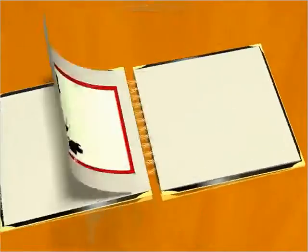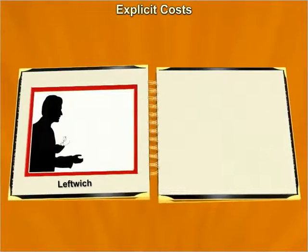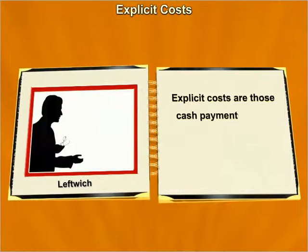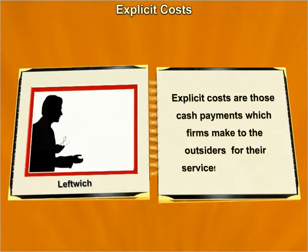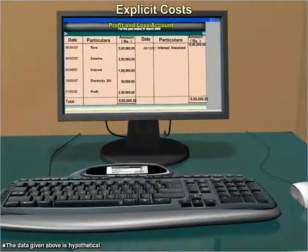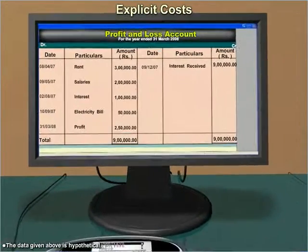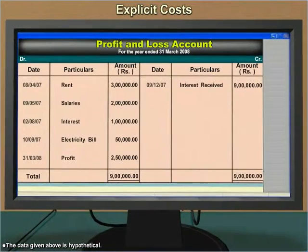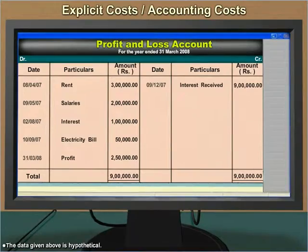In the words of Leftwich, explicit costs are those cash payments which firms make to the outsiders for their services and goods. These costs are recorded in the firm's book of accounts. Therefore, they are also known as accounting costs.